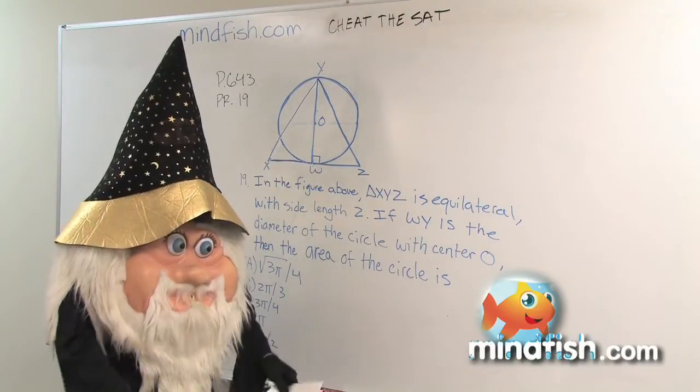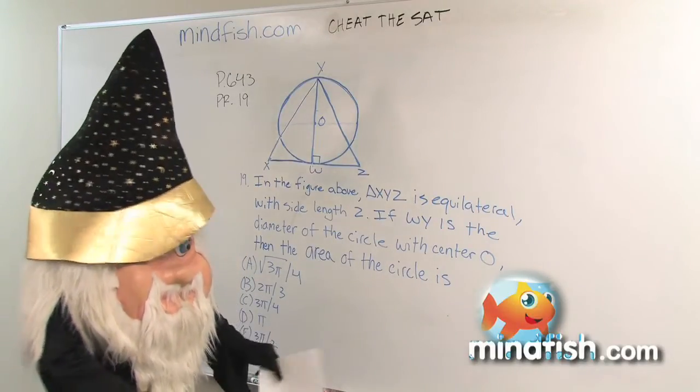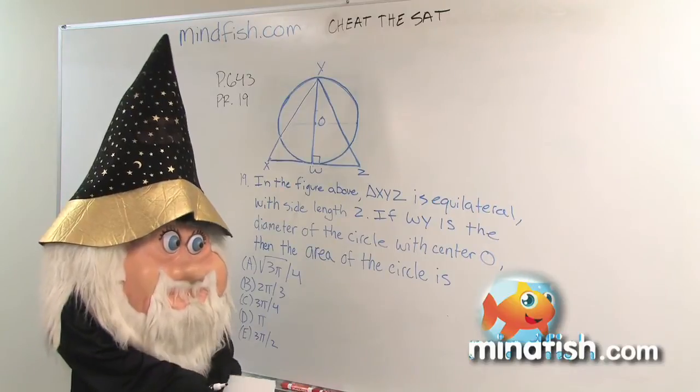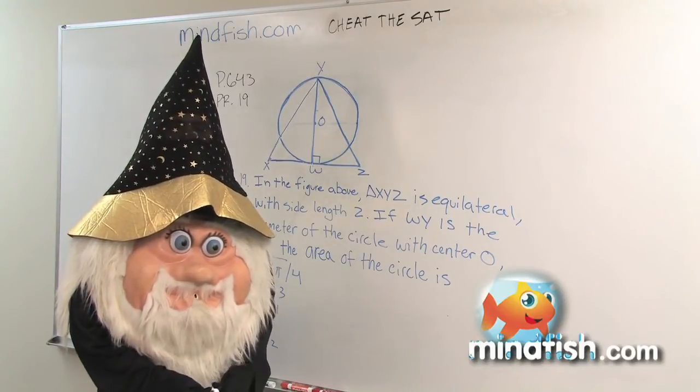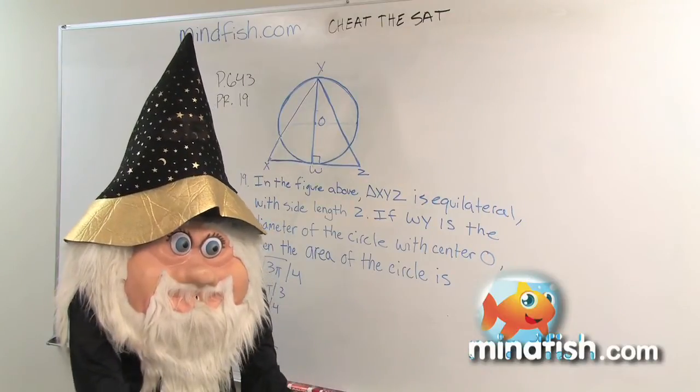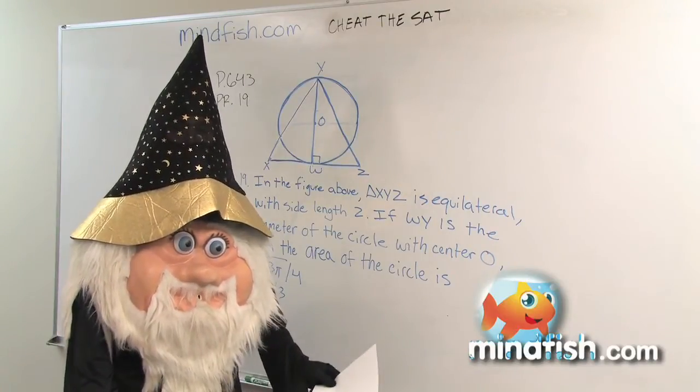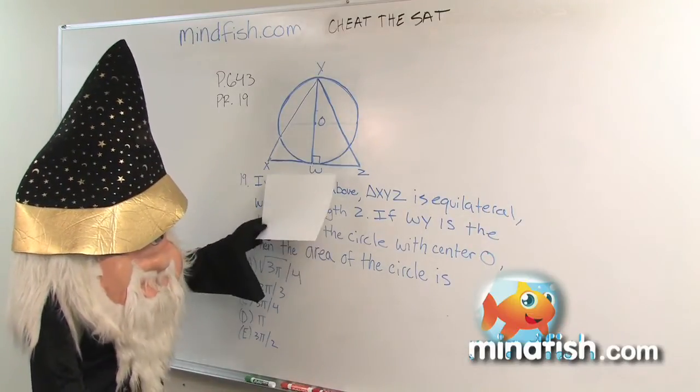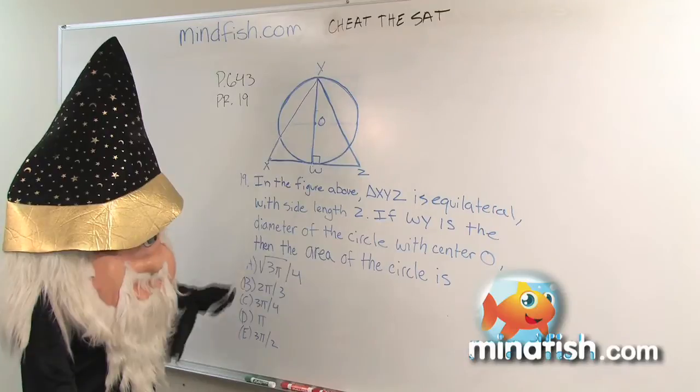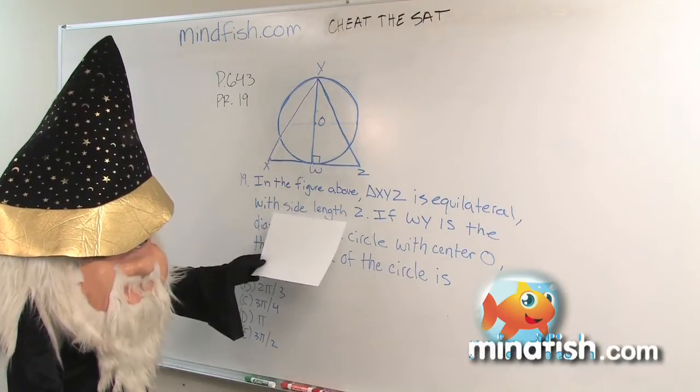So what we're going to do here is show you how to do geoestimation. Geoestimation takes advantage of the fact that the pictures on the SAT are drawn to scale unless they say otherwise. Now this problem does not say not drawn to scale, so we can assume it is. So the problem stipulates that the length of one side of the triangle is two.